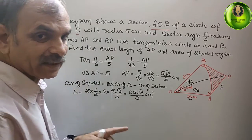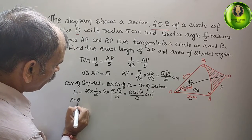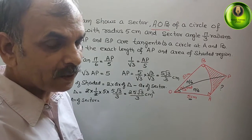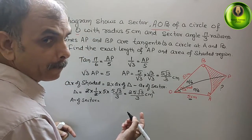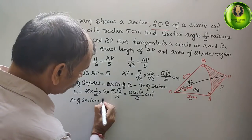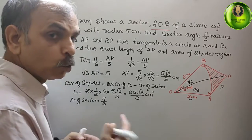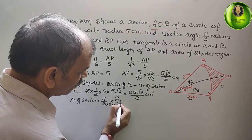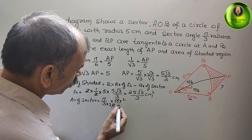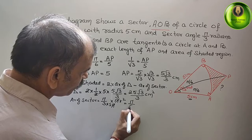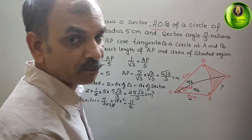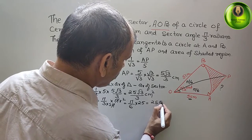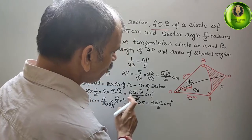Now, the area of the sector. Using the formula: (θ/2π) × πr², where θ = π/3. So (π/3)/(2π) × π × 25. The π terms cancel, giving (1/6) × 25 = 25π/6 cm².